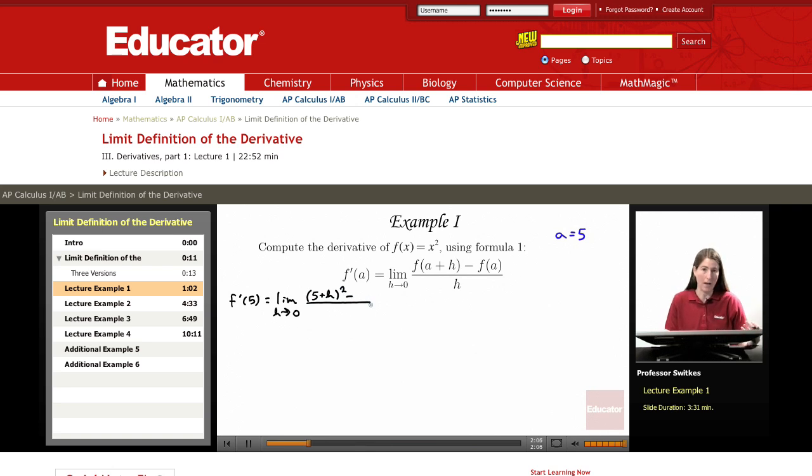f of a is f of 5 and so we get 5 squared, and our denominator is just h. And once you have the correct setup like we do here, your job becomes simply simplifying the fraction and then carrying out the limit as h approaches 0. So let's begin working on all of that.